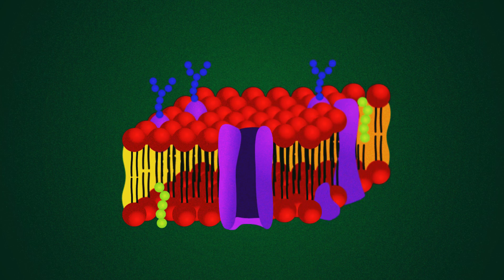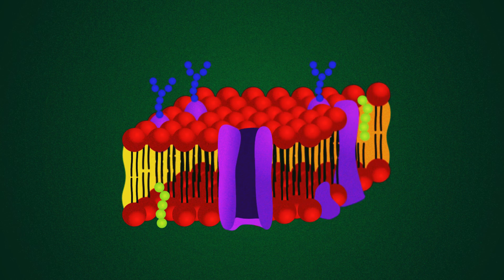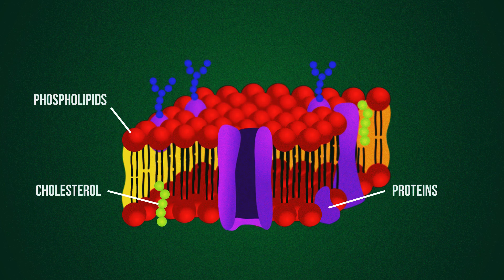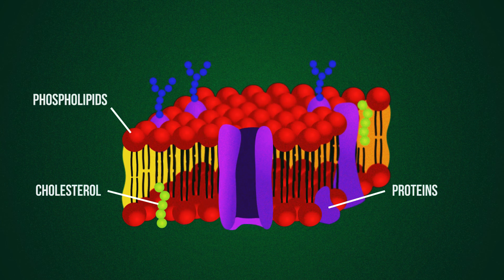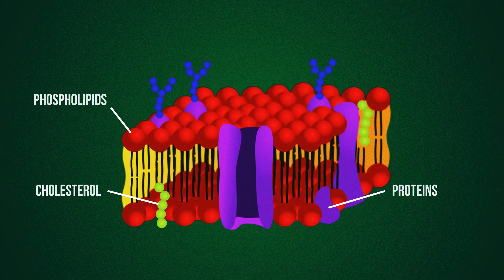So now you know what keeps our trillions of cells together, and all animal and plant cells too. This wonderful fluid mosaic of phospholipids, cholesterol, and different kinds of proteins.